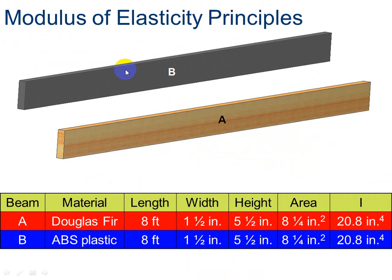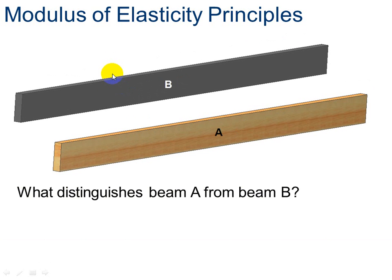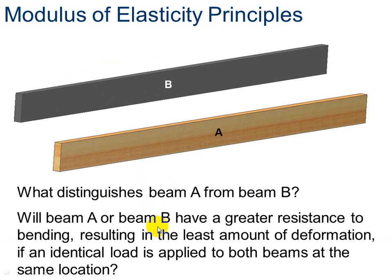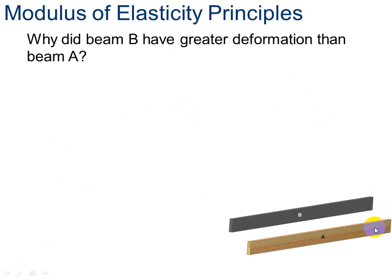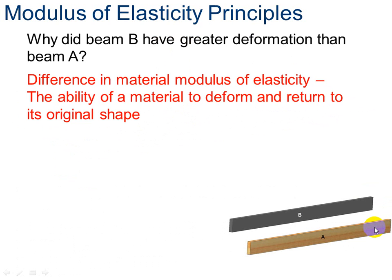So, modulus of elasticity. Let's look at this. We have beam A here and beam B. So, now the same orientation. We're just going to have beam A is made from Douglas fir, and beam B is made from ABS plastic. So, what distinguishes them from each other? It's not their orientation this time. It is what they're made of. So, will beam A or beam B have a greater resistance to bending? Do you think Douglas fir or ABS plastic will resist bending more? My guess is A. So, let's check this out. Why did B have a greater deformation than A? The difference is in the materials modulus of elasticity. It's the ability of a material to deform and return back to its original shape.